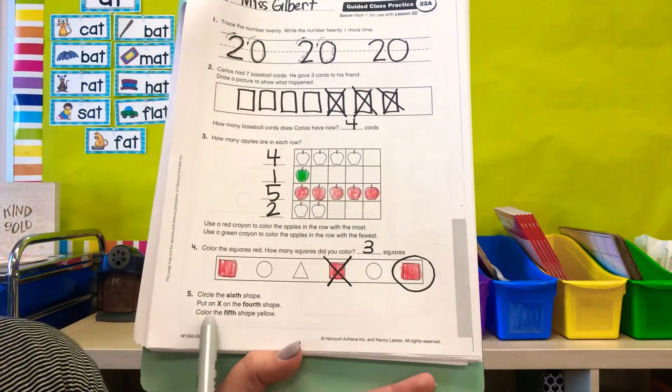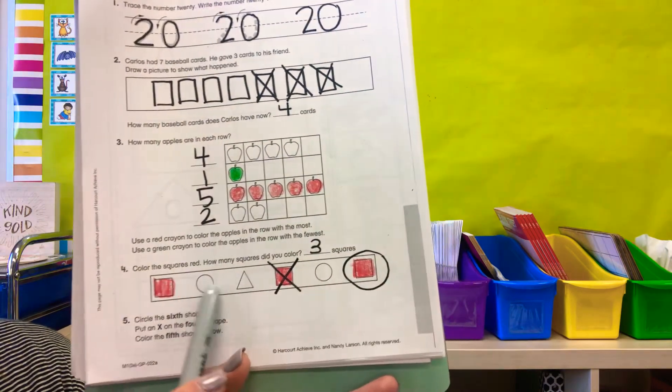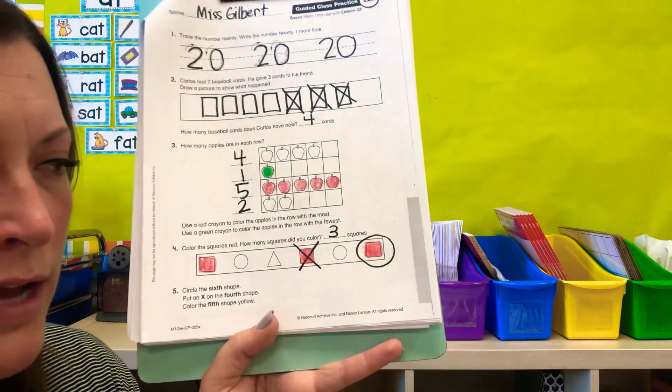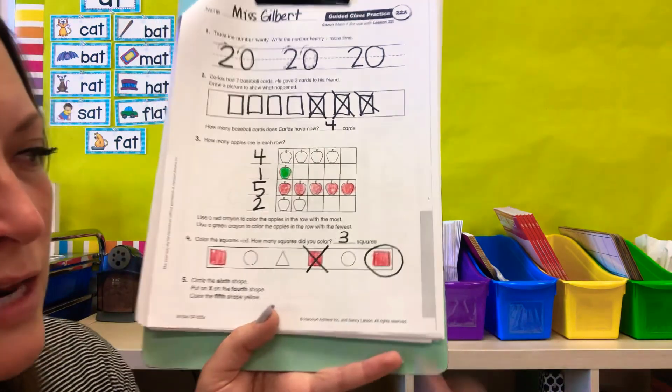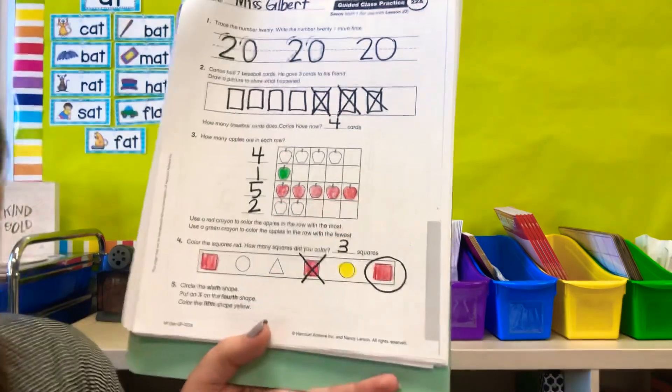And last, color the fifth shape yellow. First, second, third, fourth, fifth. So grab your yellow crayon and you're going to color that circle in between the X'd out square and the circled square yellow.